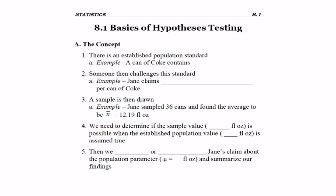It always starts with some sort of pre-existing fact about the population, a population standard. We use the example here that a can of Coke is known to have 12 fluid ounces.